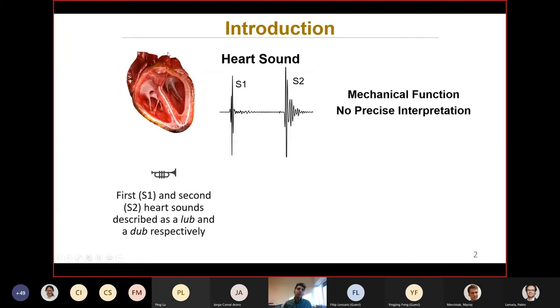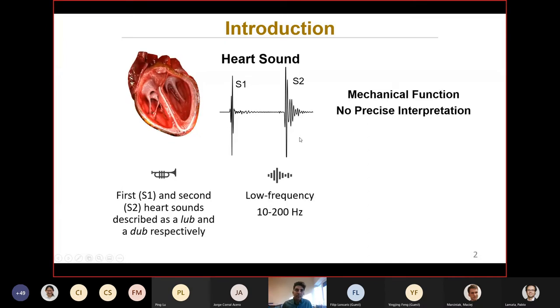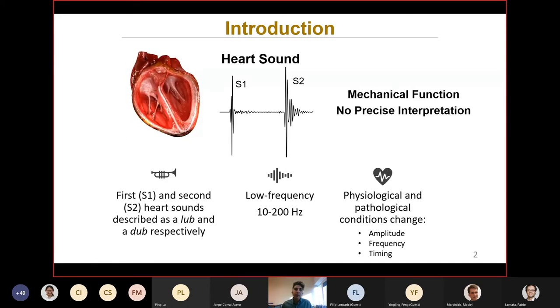This signal has two major parts. The first part is the first heart sound, and it is described as lub. And the other part is dub, which is called the second heart sound. This signal is a low frequency signal. It is mostly between 10 to 200 hertz. And it changes by physiological and pathological conditions in terms of amplitude, frequency, and timing. So we can use these features for diagnosis and prognosis.